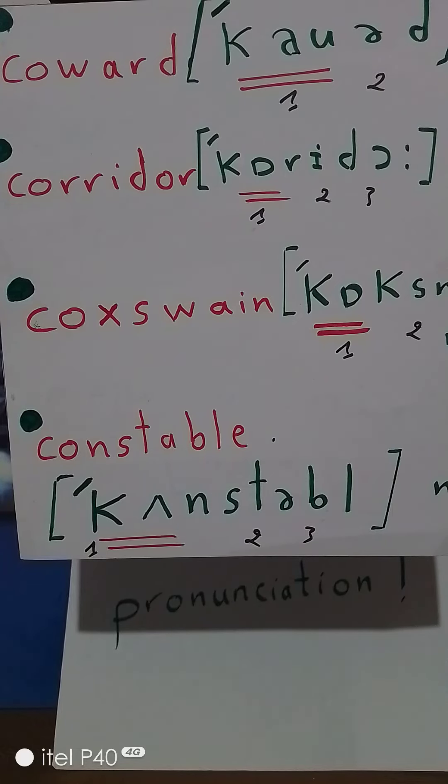Hi there, check your English pronunciation with these English words: coward, corridor, coxswain, constable. The first word is coward. Coward has two syllables with stress on the first syllable.